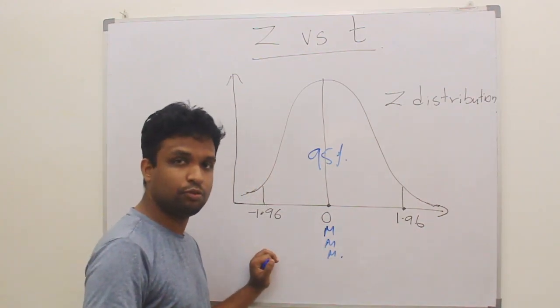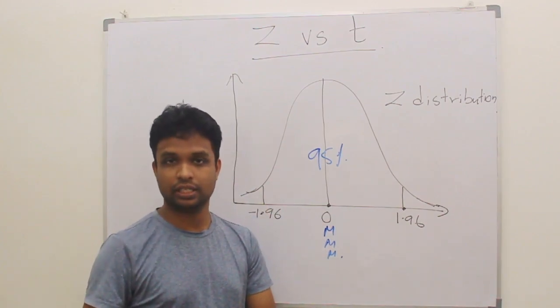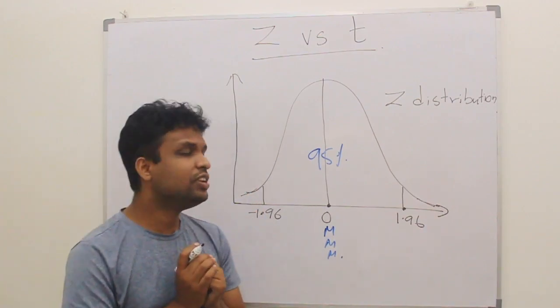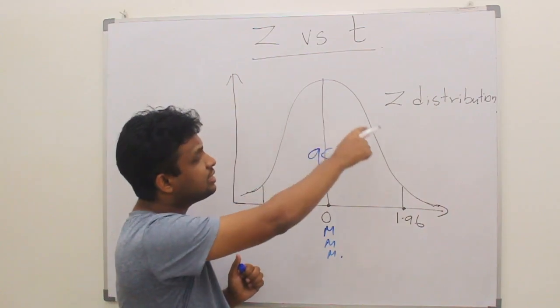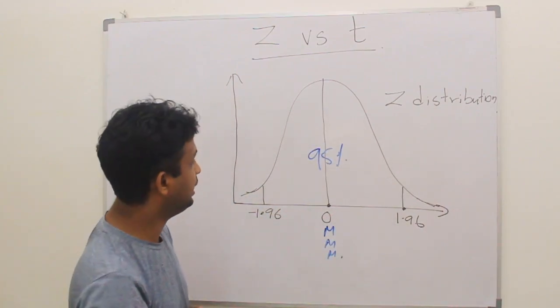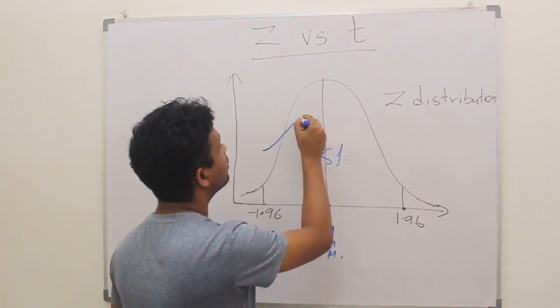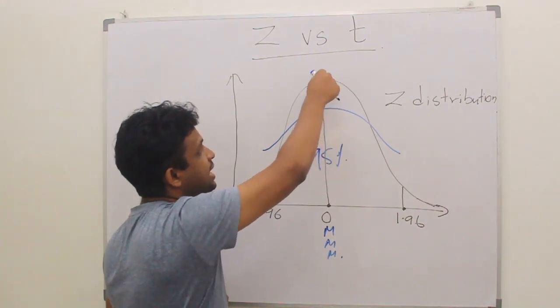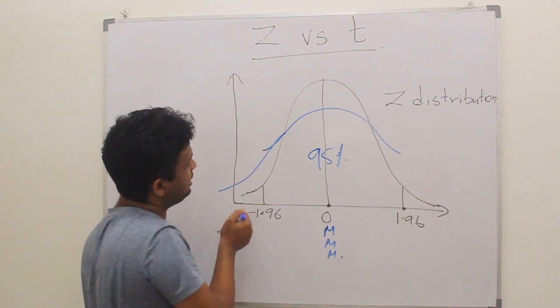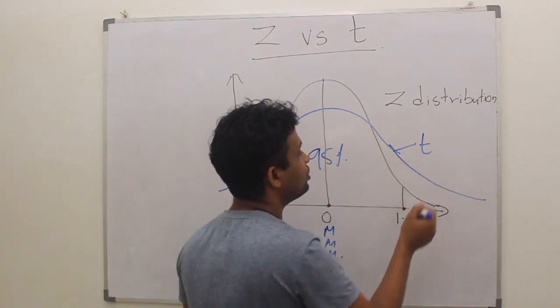So what is T-distribution? T-distribution, as I told you earlier, is for small sample sizes. When the sample size is small, we will not get this exact normal distribution, but we will get some distribution with a low peak. The peak is less than the Z-distribution, but with some heavy tails.